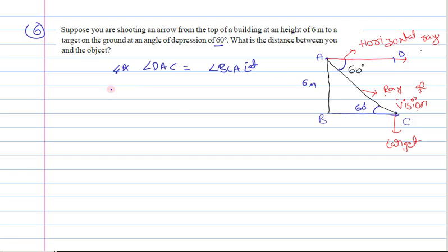Now, in triangle ABC, we know AB is 6 meters and angle C is 60 degrees. We need to find out AC.